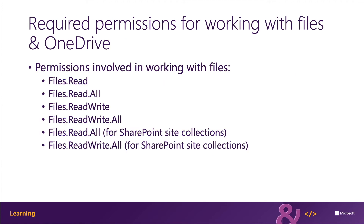OneDrive resources are returned either as drive or drive item objects. A drive item represents a folder or a file, and images are considered special types of files with additional properties such as height and width. You can also determine the specific resource type of a drive item with the presence of folder, file, or image properties on the drive item object. To do OneDrive operations, you'll need one of the required permissions shown on the slide, and the specific permission required will depend on the operation you want to perform.